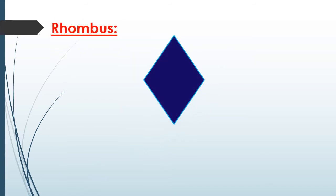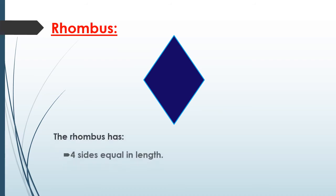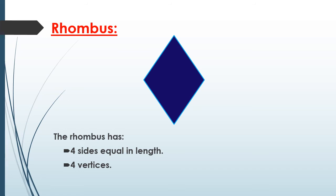Who can tell me? No, it's not a diamond. Now we call it a rhombus. The rhombus has four sides equal in length and it has four vertices.